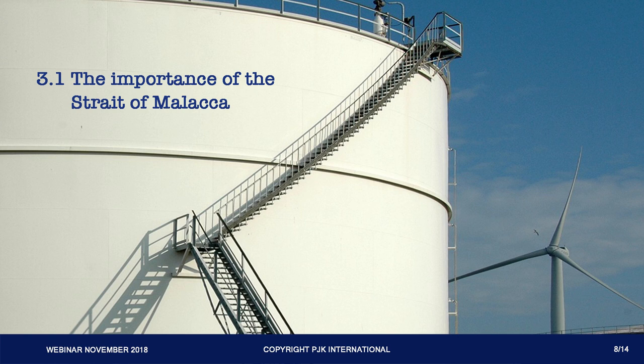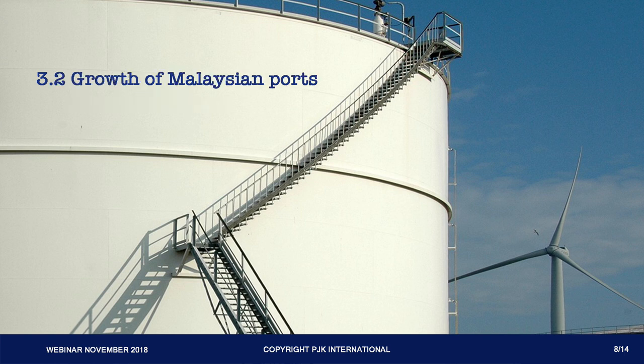The Strait of Malacca is one of the most important shipping lanes in the world, connecting the Indian Ocean to the Pacific Ocean, and saw over 82,000 ship transits in 2017. Regarding growth of Malaysian ports: if Malaysian ports develop to their full capacity to handle both tankers and container vessels, fewer ships will call Singapore. One new port project is Kuala Lingyi International Port, which is being developed near Malacca to handle oil tankers and offer bunker operations.